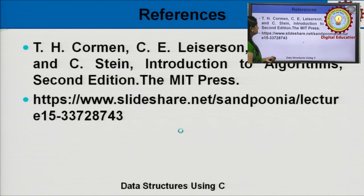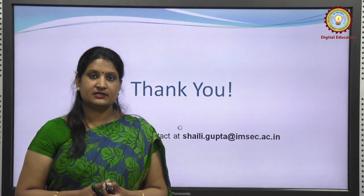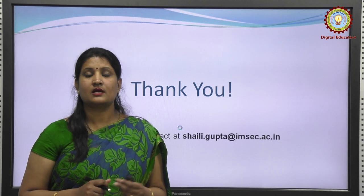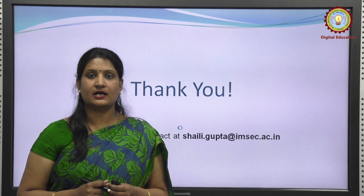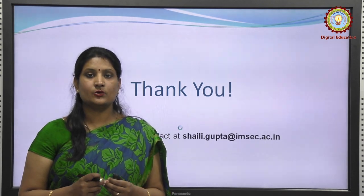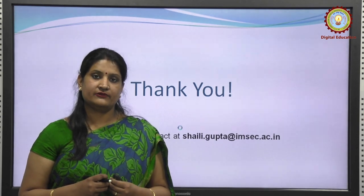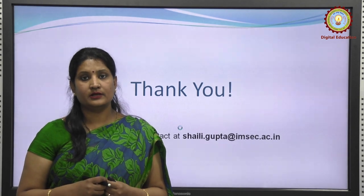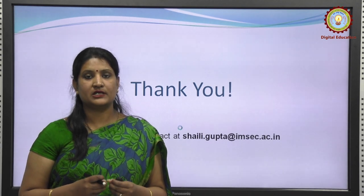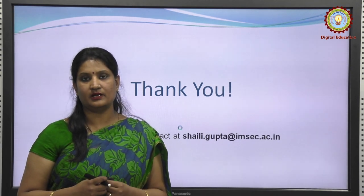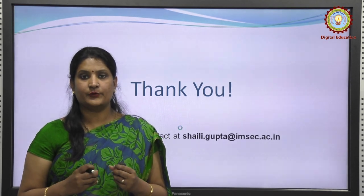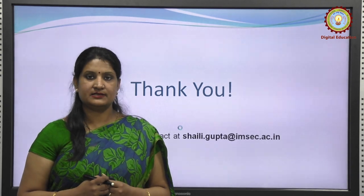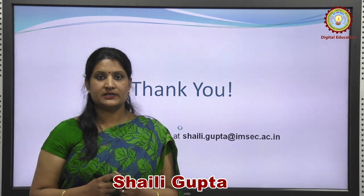These are the references. We studied BFS and DFS. BFS is used to find the shortest path and minimum spanning tree of an unweighted graph; it is also used in social networking websites, cycle detection in undirected graphs, path finding, and finding all nodes within a connected component. DFS is used for cycle detection, path finding, topological sorting, testing if a graph is bipartite, and finding strongly connected components. For an unweighted graph, DFS traversal produces the minimum spanning tree and all-pair shortest path tree. Thank you so much; for any query you can contact at this email ID.